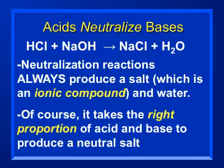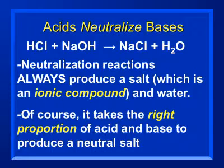These neutralization reactions always produce an ionic compound — usually a salt. When I say salt, I don't mean just table salt; I mean any combination of an alkali metal and a halogen. However, the ratio isn't always one-to-one. For example, calcium iodide has a different formula than sodium iodide, so you have to account for those differences.